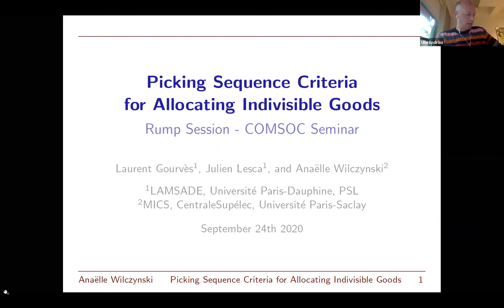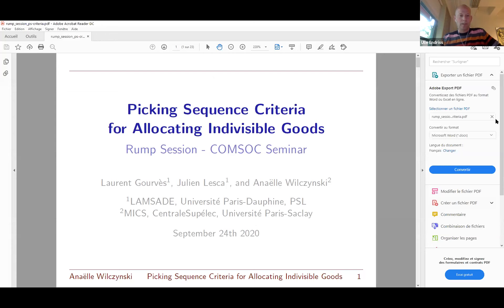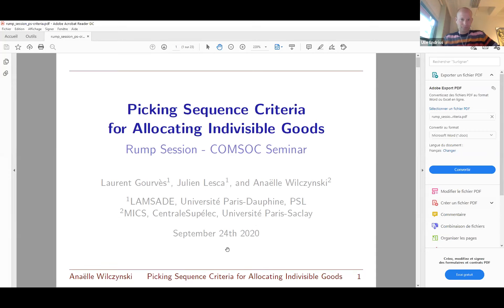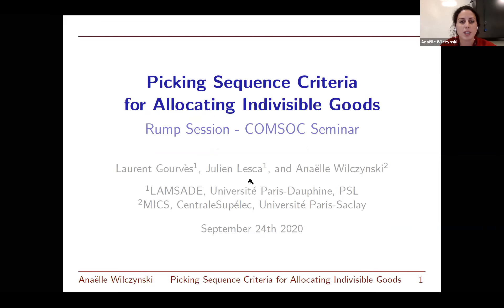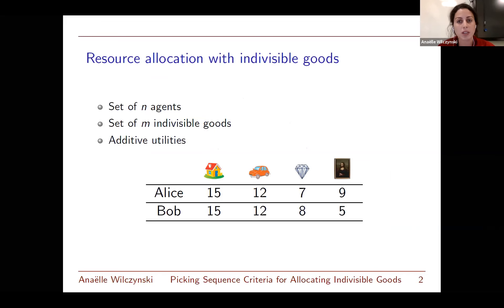Our next speaker is Anaëlle Wilczynski, who will speak about picking sequences. This is joint work with Laurent and Julian Andeska and concerns fairness criteria in fair division. We have a set of n agents and m indivisible goods — like houses, cars, and similar items — where agents have additive utilities.